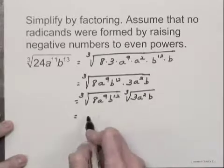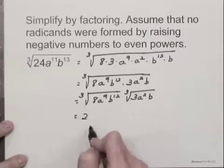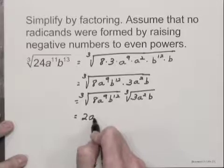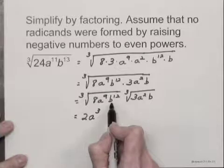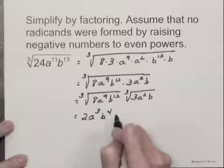And taking the cube roots here, the cube root of 8 is 2. The cube root of a to the 9th power is a cubed. And the cube root of b to the 12th power is b to the 4th.